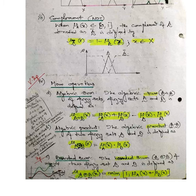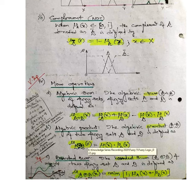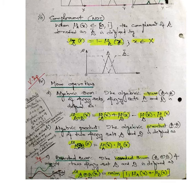The algebraic product of two Fuzzy Sets A and B, denoted A dot B, is defined as: mu of (A dot B)(x) equals mu_A(x) times mu_B(x). That is the dot product or algebraic product of the Fuzzy Set — it is straightforward.